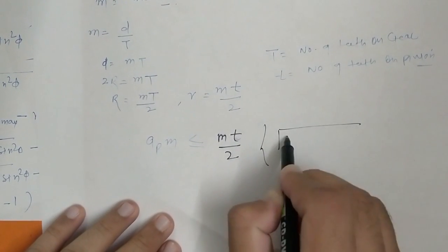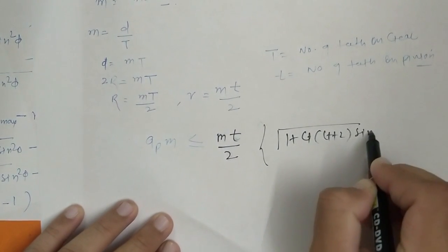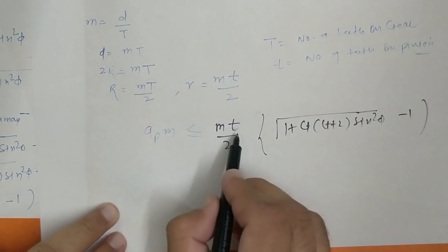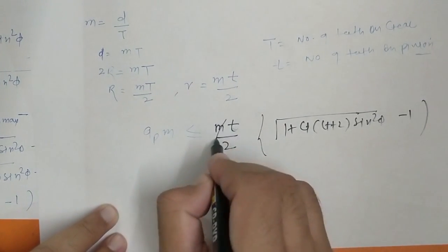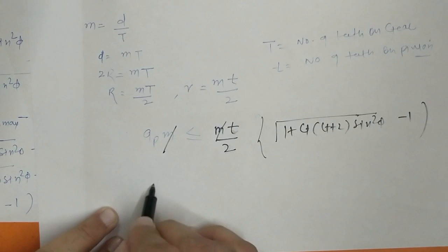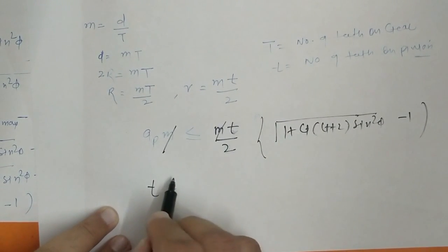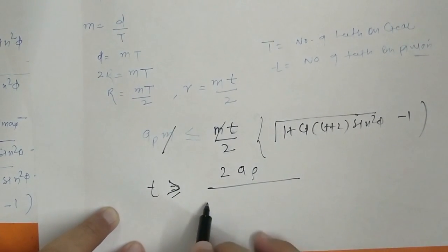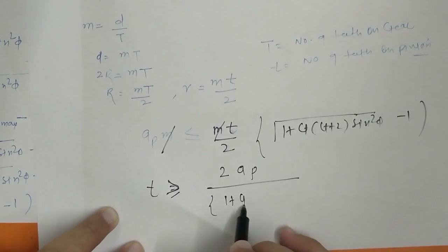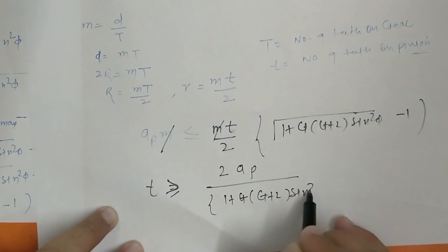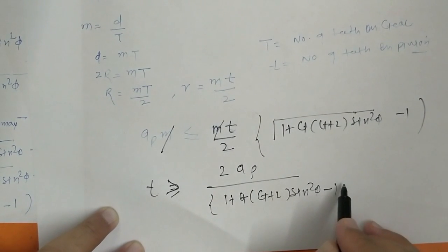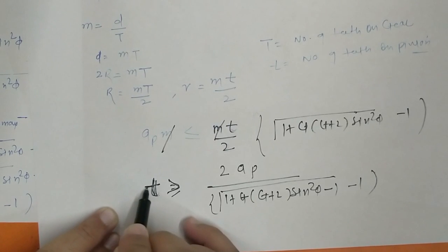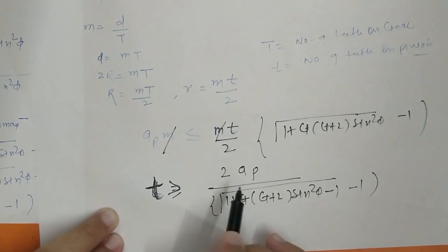After cancelling M from both sides, we solve for t. The minimum number of teeth on the pinion to avoid interference is: t_min = 2·ap / [√(1 + G·(G + 2·sin²(phi))) − 1]. The number of teeth t must be greater than or equal to this quantity, but the minimum value is given by this formula.